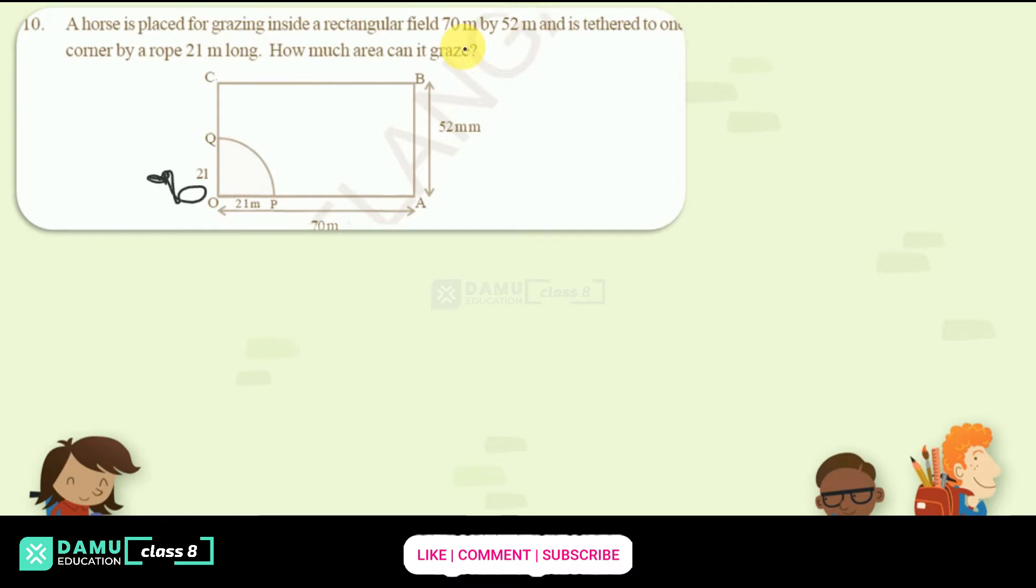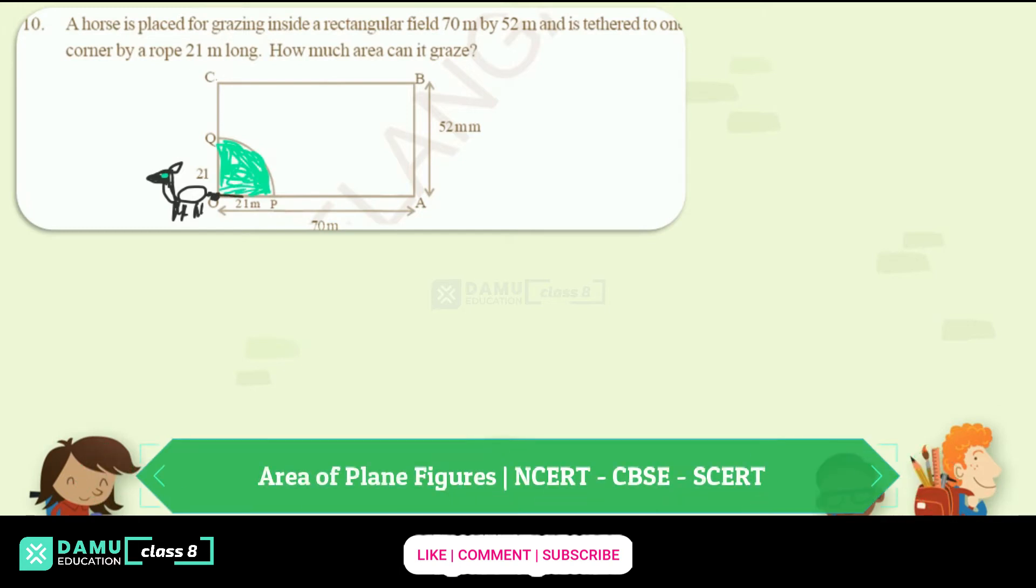So this horse is tethered here. This is the grazing field. The horse can graze up to here. What they are asking is how much area can be covered - only this much area. If you find this area of sector, then easily we can find it.